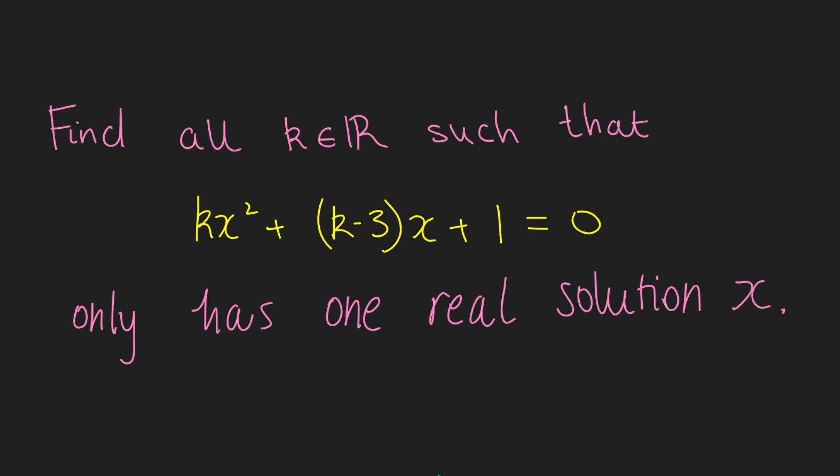Hi, thanks for joining me. Today I'm going to be showing you a problem which catches out most A-level maths students. We want to find all real numbers k such that kx² + (k-3)x + 1 = 0 only has one real solution x. If you want to have a go at this problem, pause the video now and I'm going to dive straight into the solution.